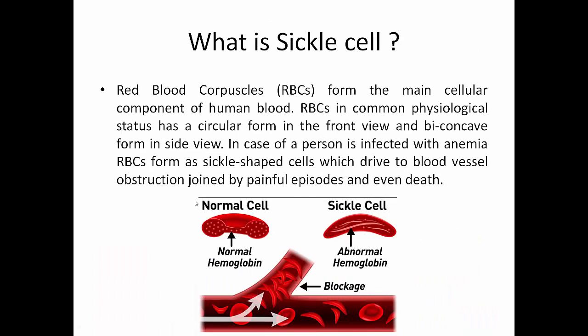First thing we need to know: what is sickle cell anemia or what is sickle cell? Normal red blood cells form in a circular shape as shown in this figure. But when a person is infected with anemia, the red blood cells shape and form as sickle shape as shown in this figure. This form will lead to the cells getting stuck in the blood vessels.